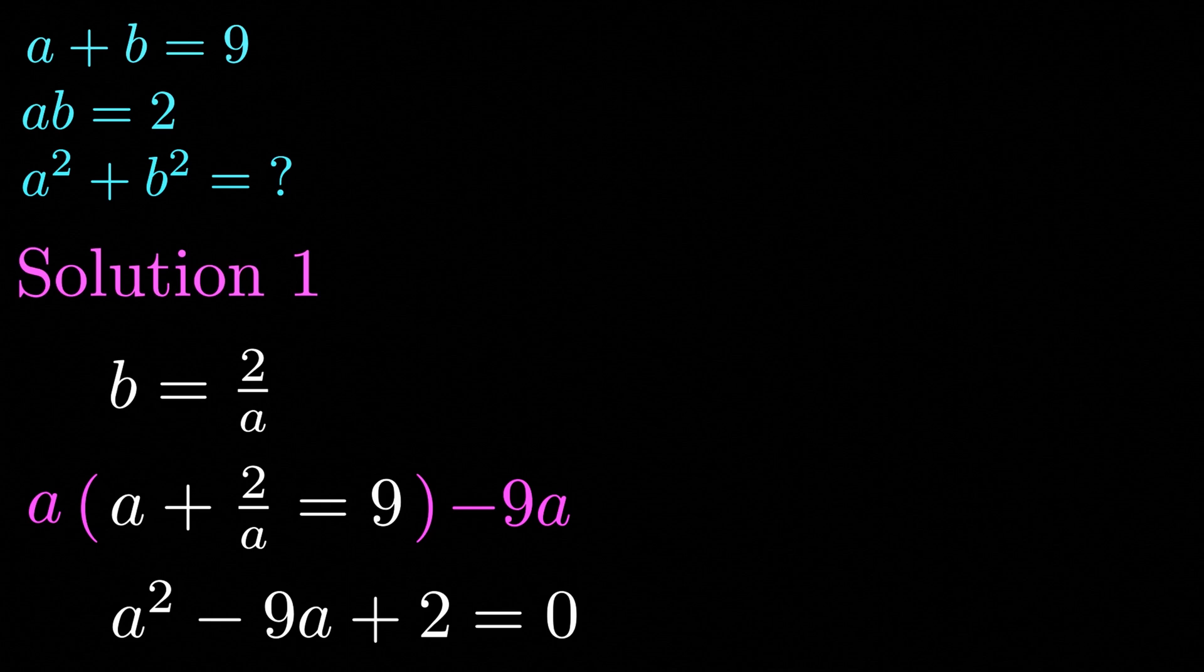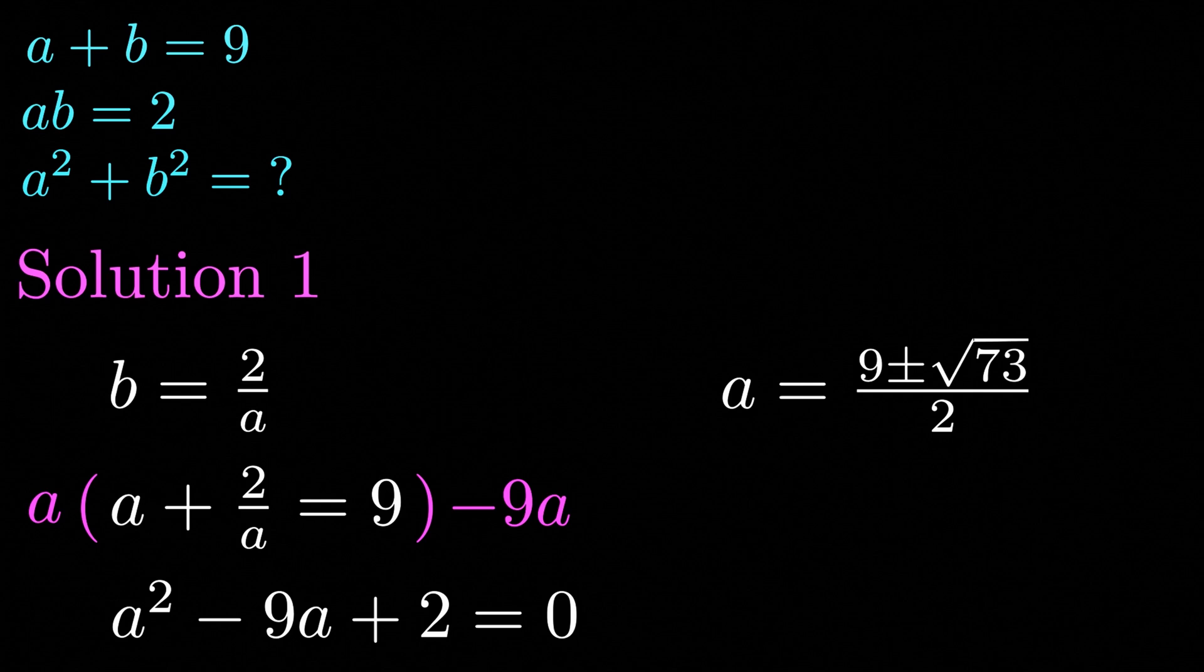So that we end up with a quadratic equation a squared minus 9a plus 2 equals 0. Now we can solve for a using the quadratic formula. Doing so we get two solutions: a is equal to 9 plus or minus the square root of 73 divided by 2.